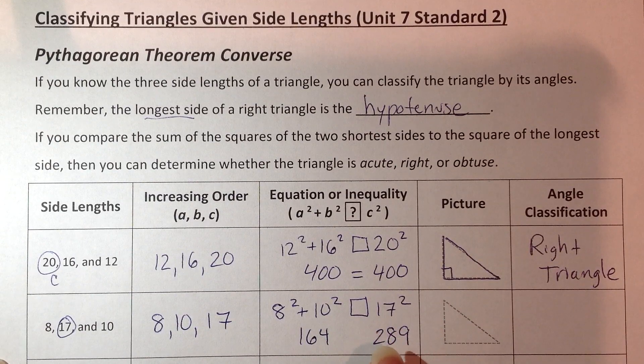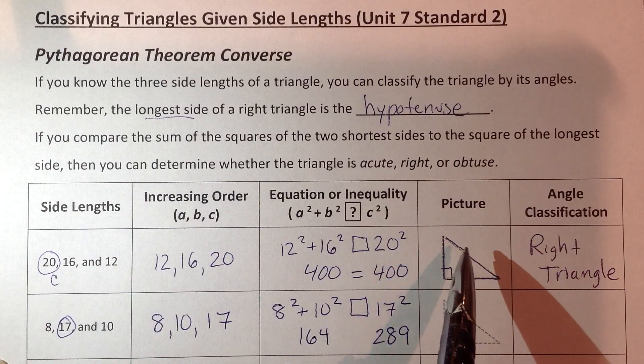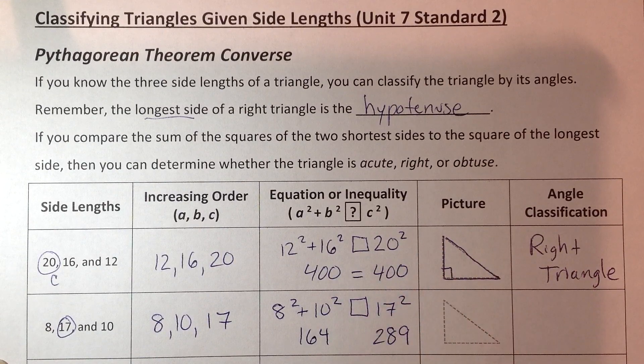So what I want you to visualize right now is, what happened to C? That's going to be your question. If it was equal, that was a right triangle.